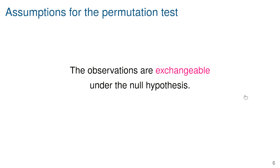The key assumption for this permutation test is that the observations are exchangeable under the null hypothesis — meaning the labels attached to the observations don't matter if the null hypothesis is true. In this kind of randomized experiment, the only assumption you need to make is that you actually randomized subjects to treatment and control group. The usual t-test requires not just this independence assumption but also that the underlying distributions are normal.